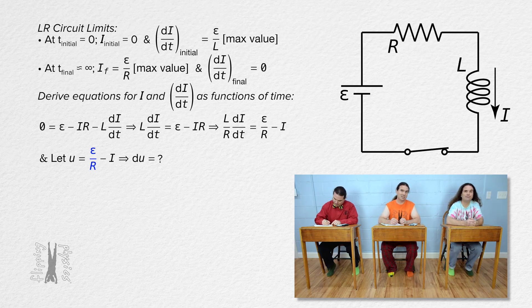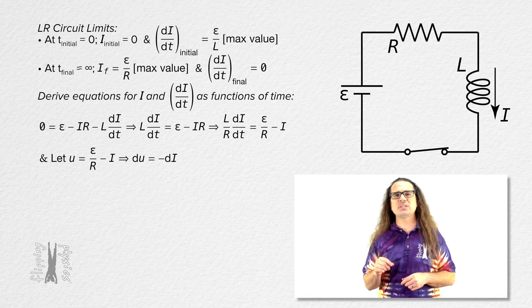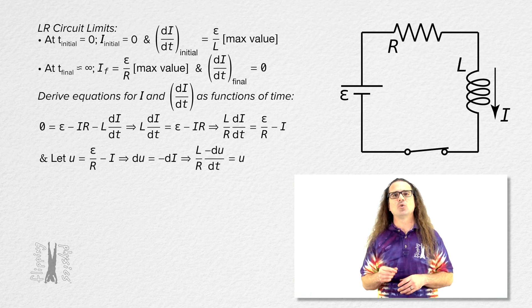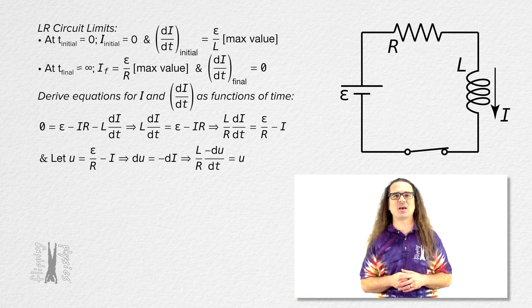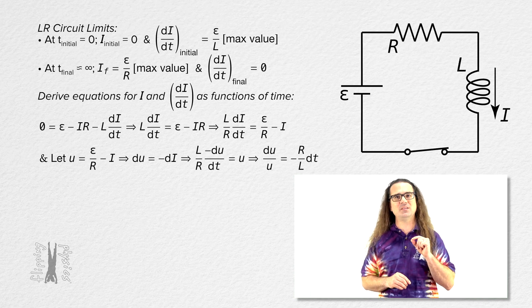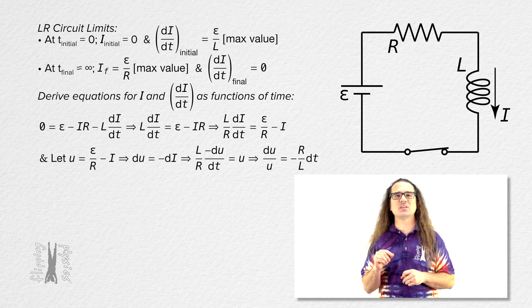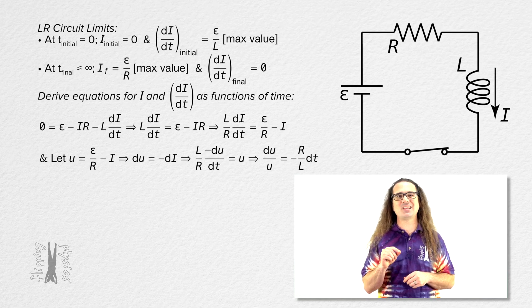Emf and resistance are constants, which means they do not change over time, so there is no change in emf over resistance. Therefore, the infinitesimally small change in u, or du, equals the negative of the infinitesimally small current, or di. And when we substitute u and negative du into our equation, we get inductance divided by resistance equals the negative of the derivative of u with respect to time, all equals u. Rearranging gives du over u equals the negative of resistance divided by inductance times dt.